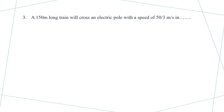Example number 3: a 150 meter long train will cross an electric pole with a speed of 50 by 3 meters per second. Find the time taken. The train crosses the electric pole, and the distance covered by the train while crossing the pole equals the length of the train.